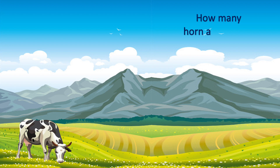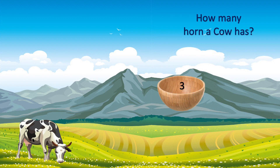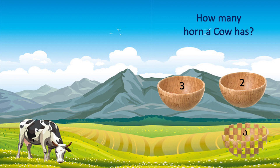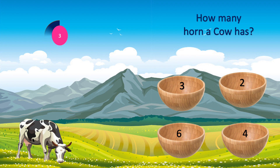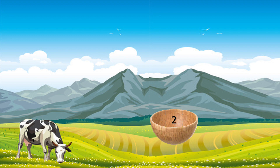So guys, this is a question about a cow. How many horns does a cow have? The options are 3, 2, 4, and 6. Your time starts now. Time is up. The correct answer is 2. A cow has 2 horns — 1 into 2 equals 2. So, 2 horns.